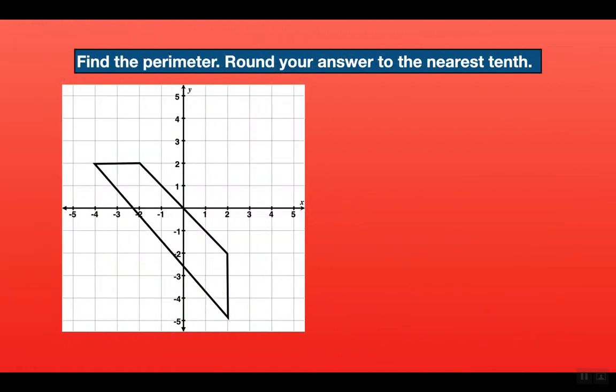For the next question we have to find the perimeter — round your answer to the nearest tenth. Remember the perimeter is the distance around the outside of the shape. Horizontal and vertical lines are simple — just count the number of squares. For slanted lines you cannot count the squares; that doesn't work. You have to either use the distance formula or use the technique I'm going to demonstrate.